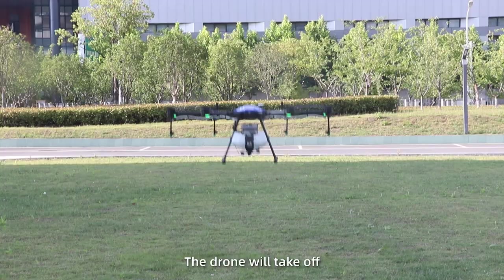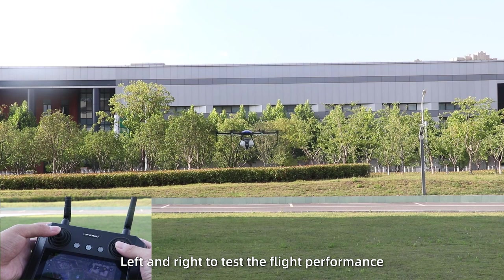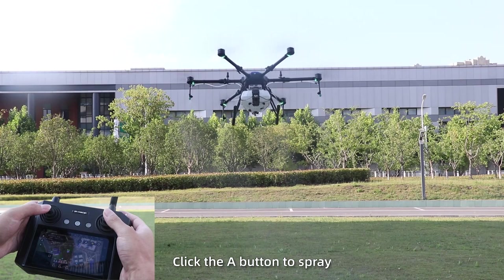After that, turn the left joystick up. The drone will take off. Turn the joystick forward, backward, left and right to test the flight performance. Click the A button to spray. And it can be seen that the drone works normally. Then turn down the left joystick and land the drone. So thus, the agriculture drone has been finished debugging.